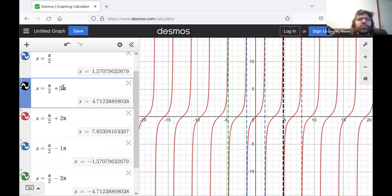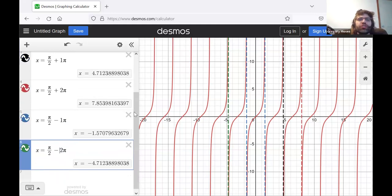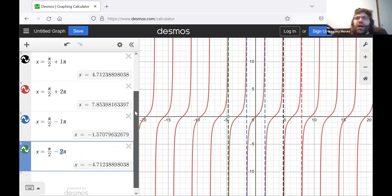And so on. So, pi over 2 plus or minus any natural number times pi will give you a vertical asymptote.